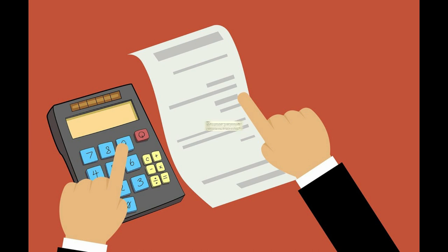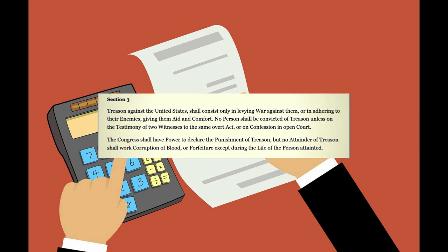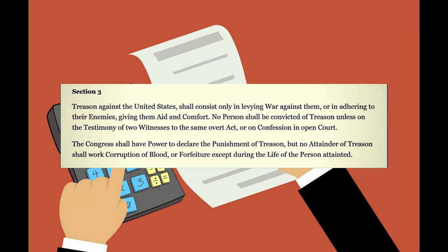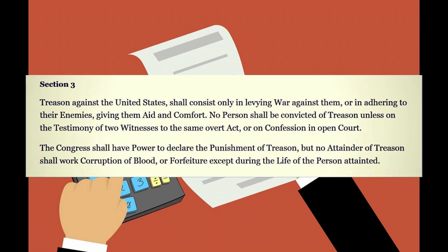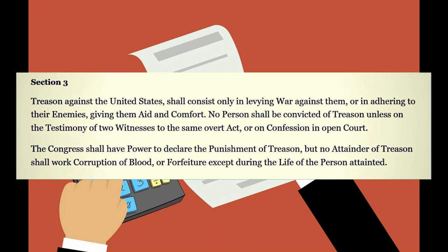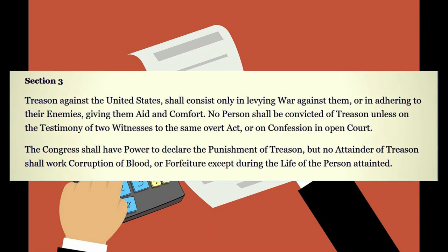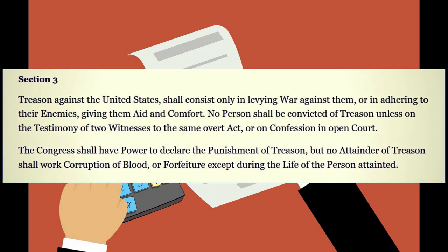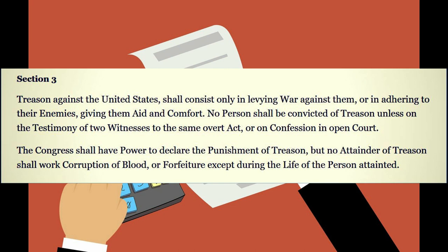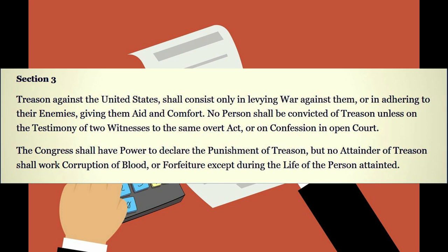In the Constitution, under the definition of treason, it states that treason against the United States shall consist only in levying war against them, or in adhering to their enemies, giving them aid and comfort. No person shall be convicted of treason unless on the testimony of two witnesses to the same overt act, or on confession in open court. The Congress shall have power to declare the punishment of treason, but no attainder of treason shall work corruption of blood or forfeiture, except during the life of the person attainted.